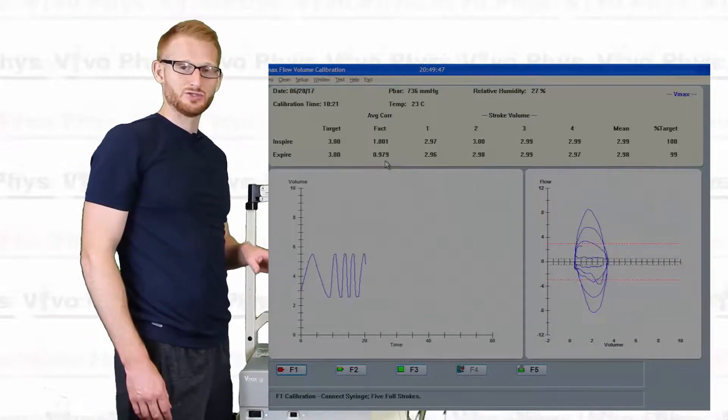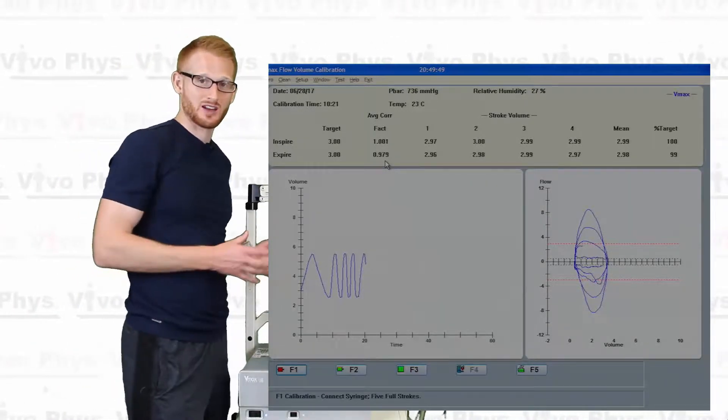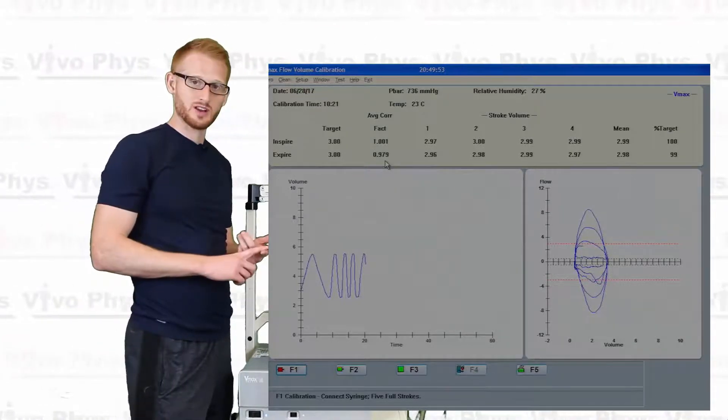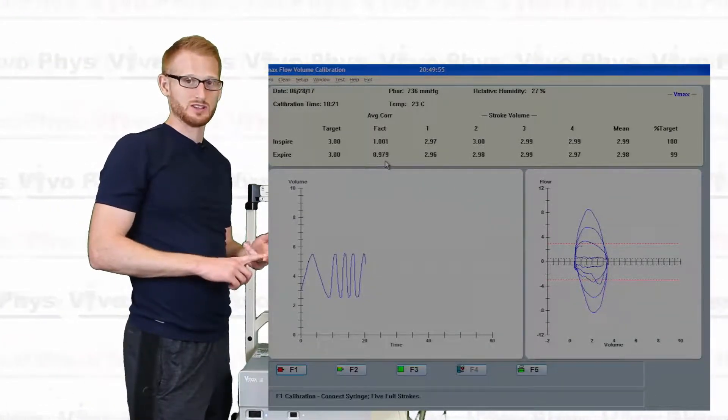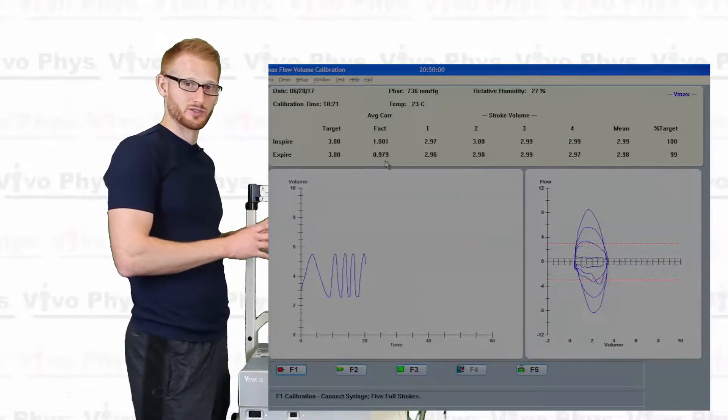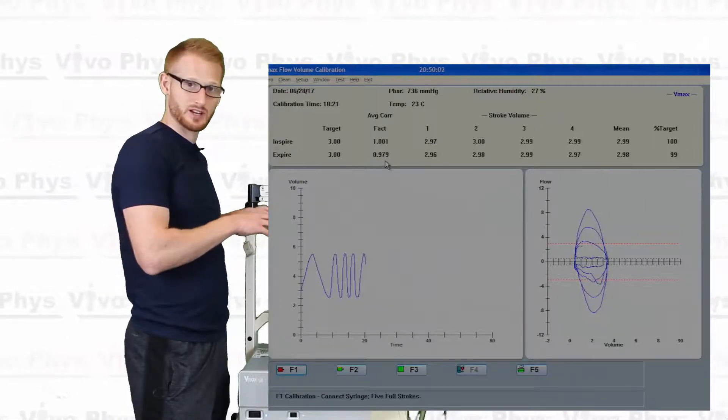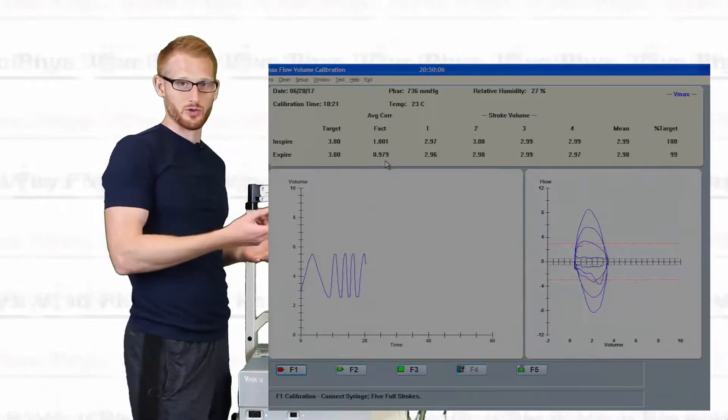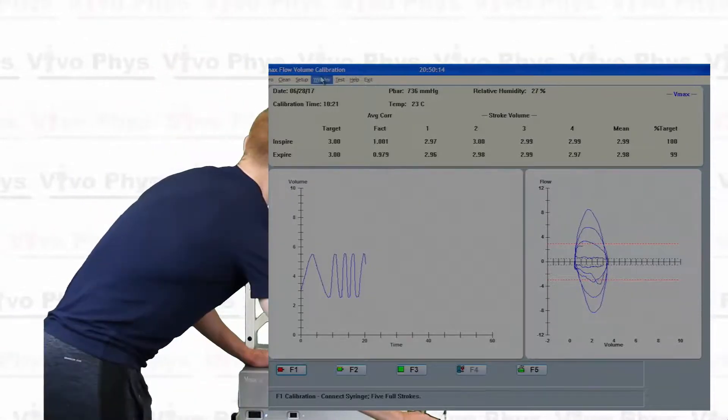Before we can actually do the flow calibration, we need to tell the system what the ambient room is like. So we need to tell it humidity, we need to tell it the temperature, and we need to tell it the barometric pressure. Alright, so the reason why we're doing the flow calibration first is because in this particular system, the flow calibration is where you have controls over those three. We're going to click on setup.